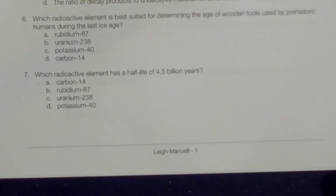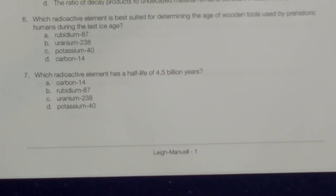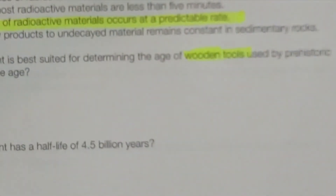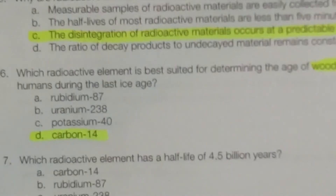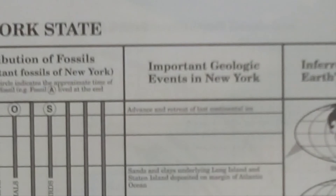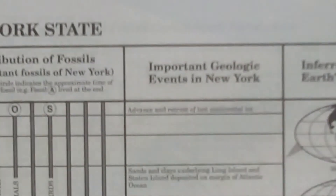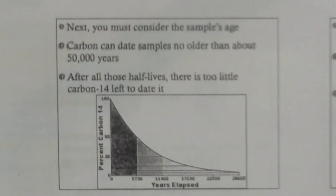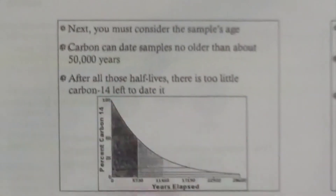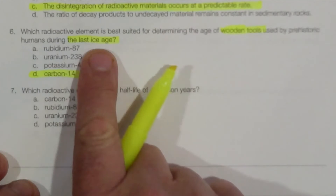Number six: which radioactive element is best suited for determining the age of wooden tools used by prehistoric humans during the last ice age? The first clue is the mention of wooden tools. Wooden tools are considered to be organic, and to find the age of organic remains, we use carbon-14. The last ice age, noted in the reference table, occurred about 22,000 years ago. Since carbon-14 can date samples no older than 50,000 years, it fits that it would be able to identify wooden tools from the last ice age.